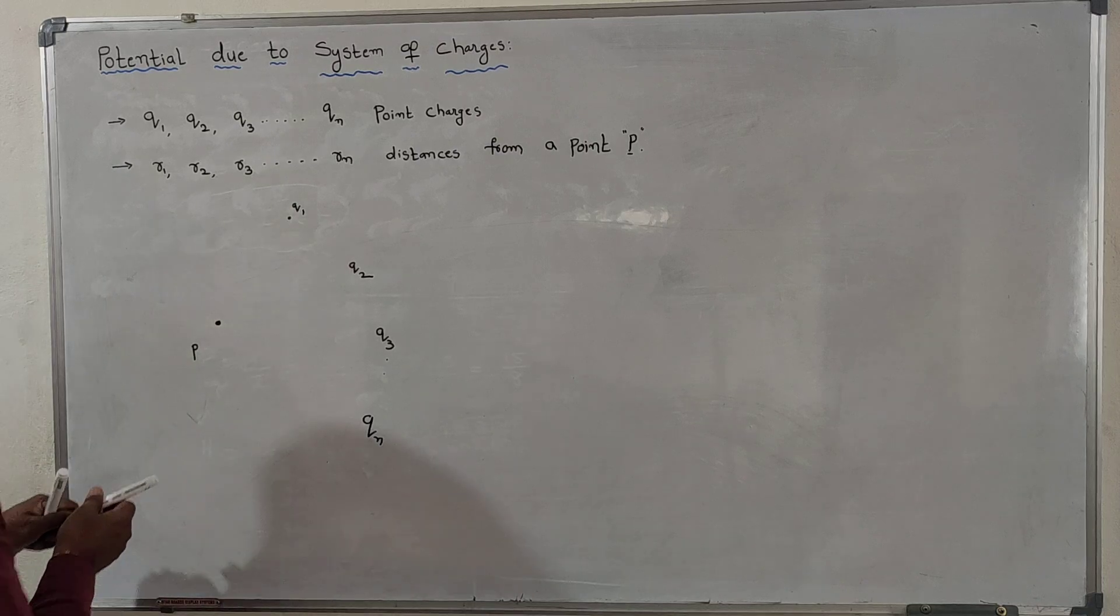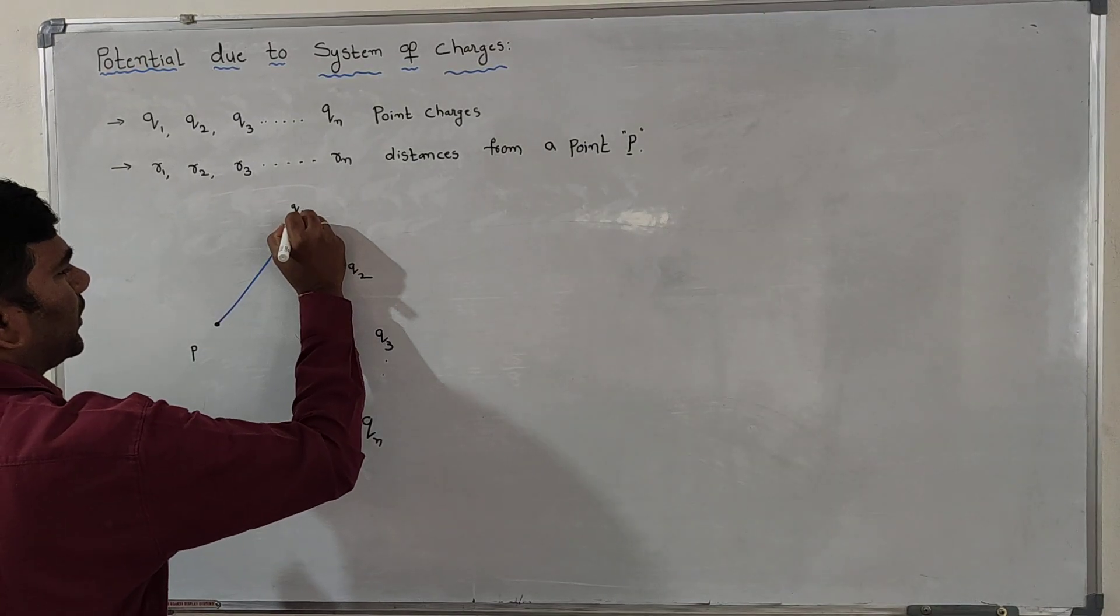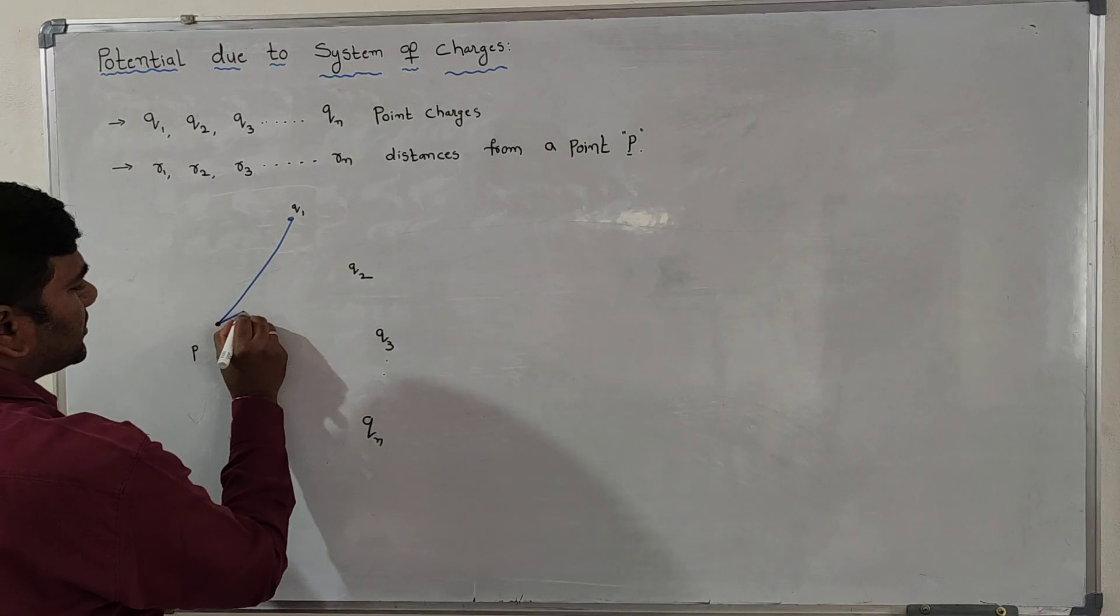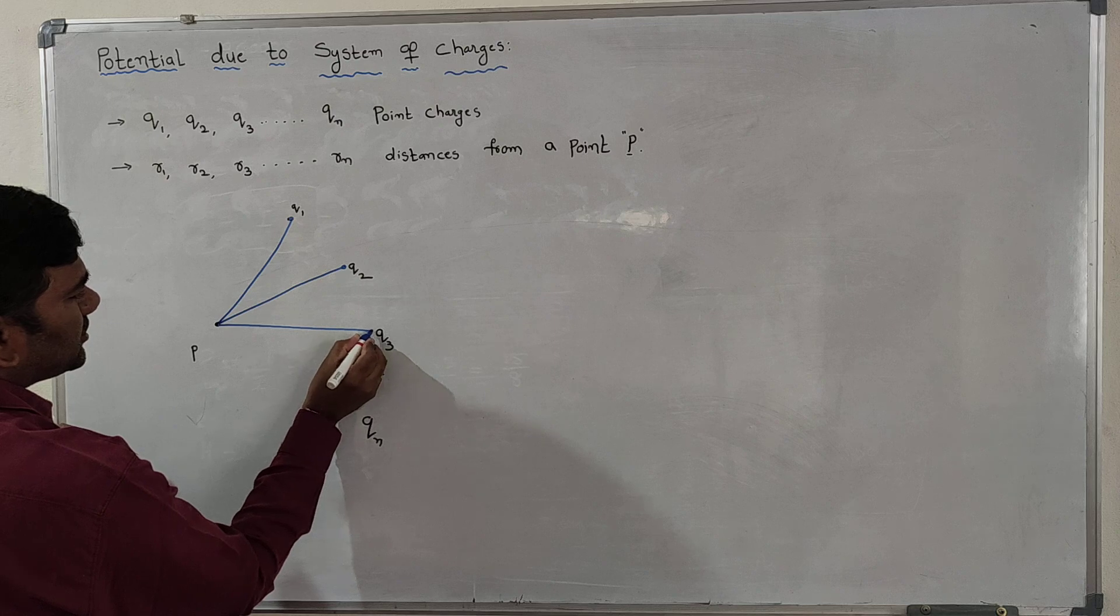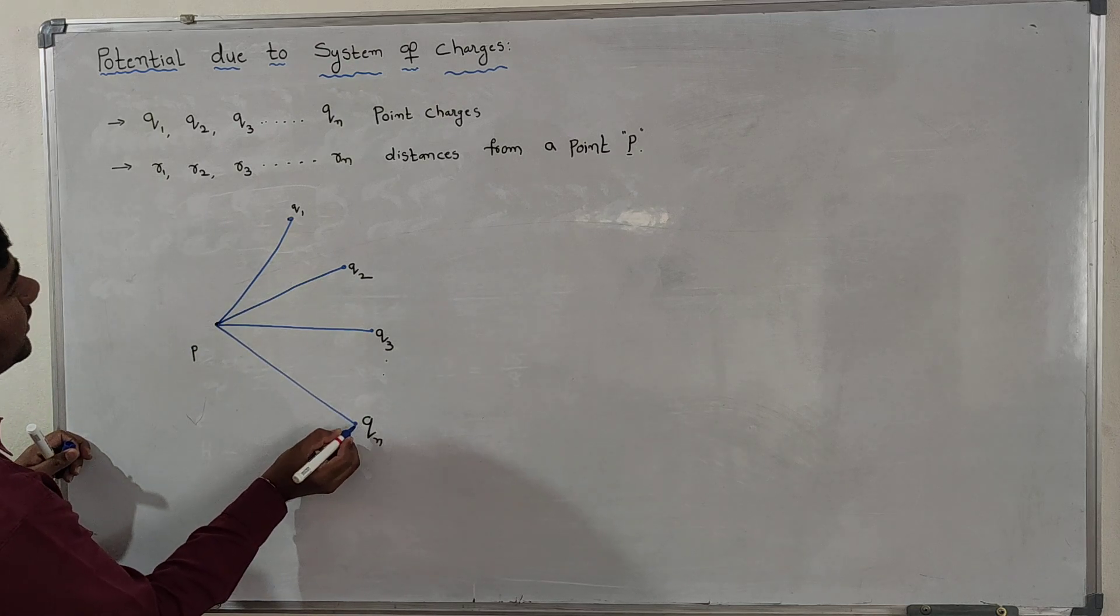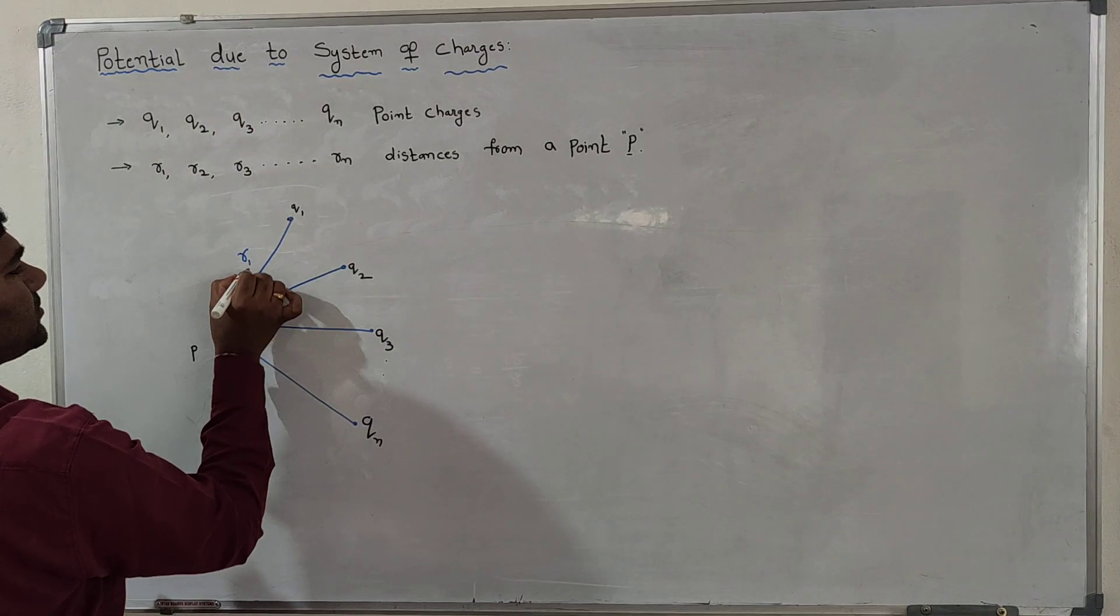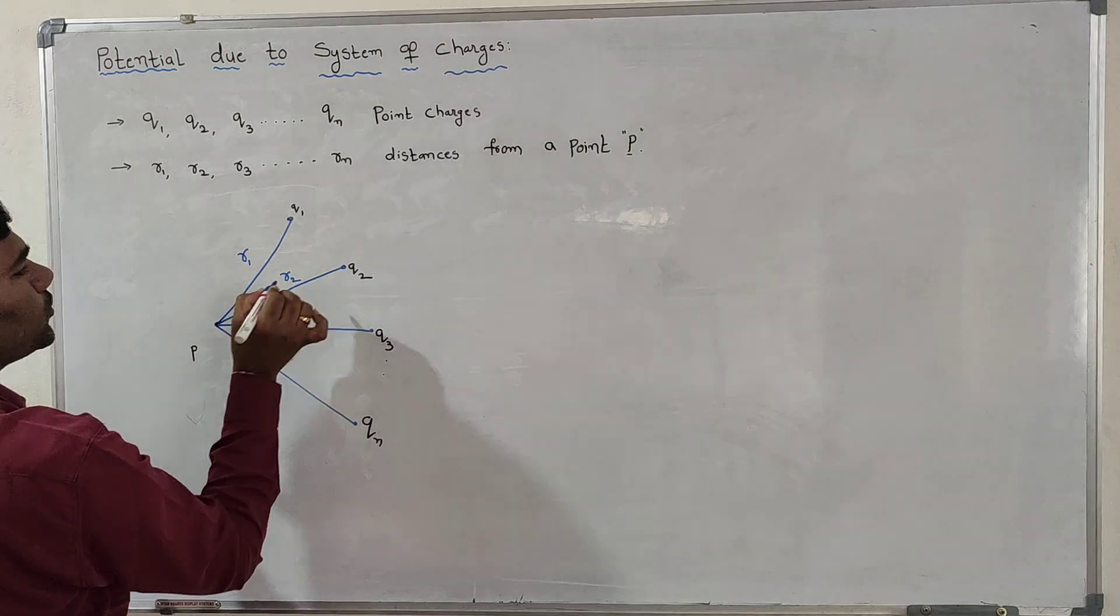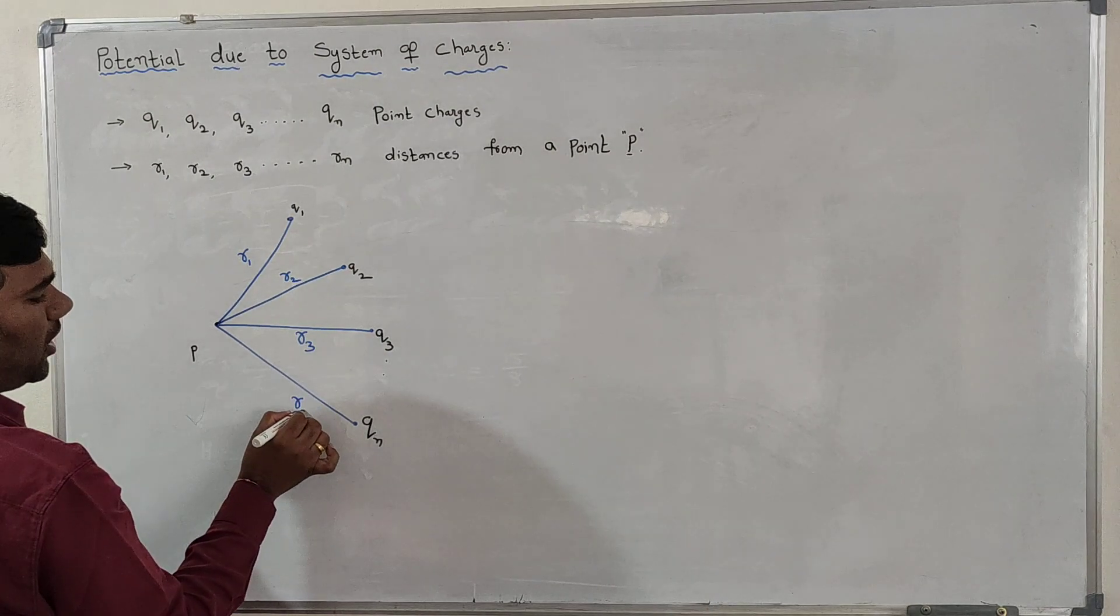Now the distance from P to Q1, the distance from P to Q2, distance P to Q3, and so on up to n charges. So the distances are R1, R2, R3, and up to Rn.